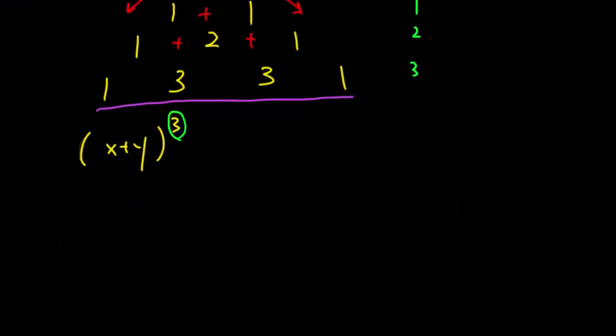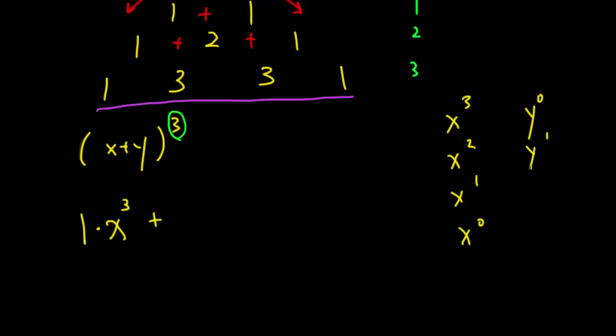Let's get started. We have x to the power of three times one, because my Pascal's Triangle is telling me the first coefficient is one. Now always remember that whenever you start with x to the power of three, that third power always goes down — so x³, x², x¹, and then x to the power of zero — while the other variable increases in power.